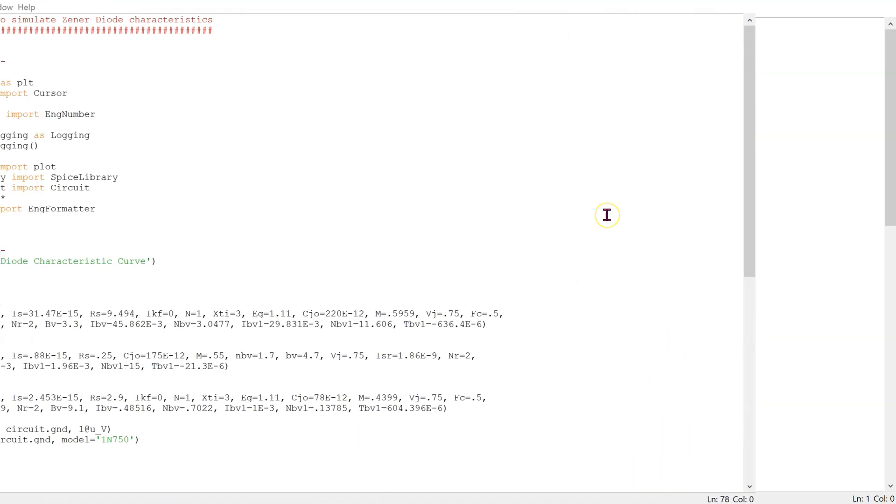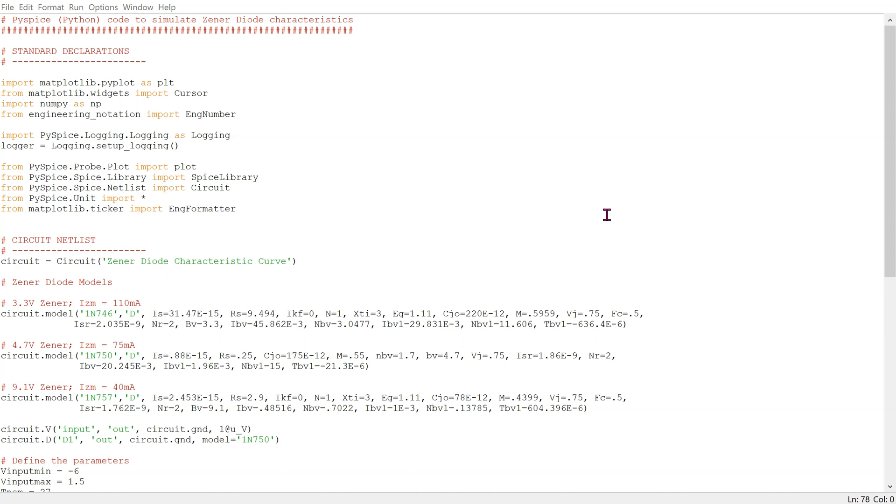This is the complete Python code to plot the zener diode characteristics. Some popular zener diode models are defined here. In this example, we are using the 4.7 volt zener, which has a maximum IZM current of 75 milliamps.